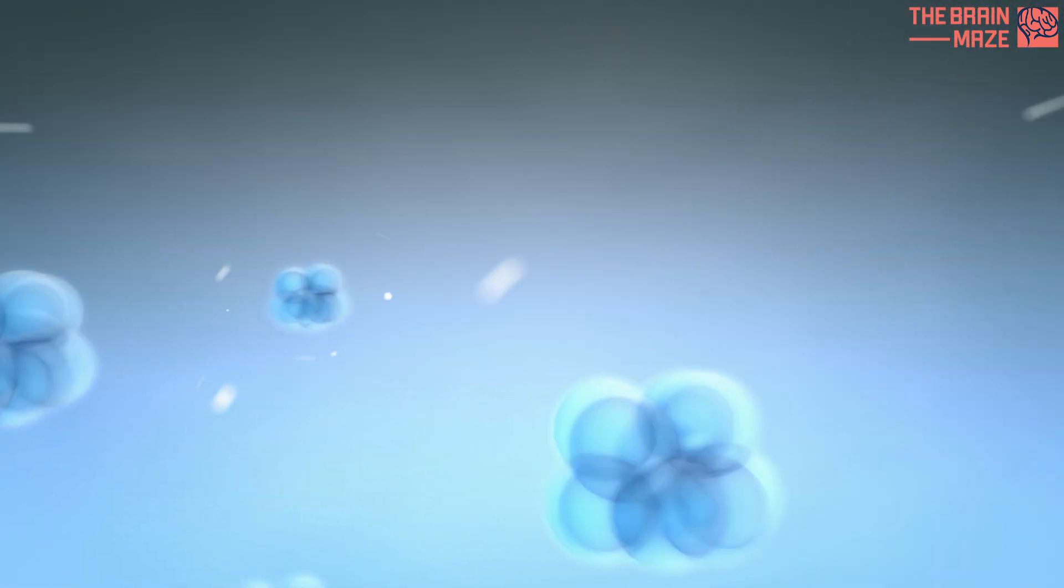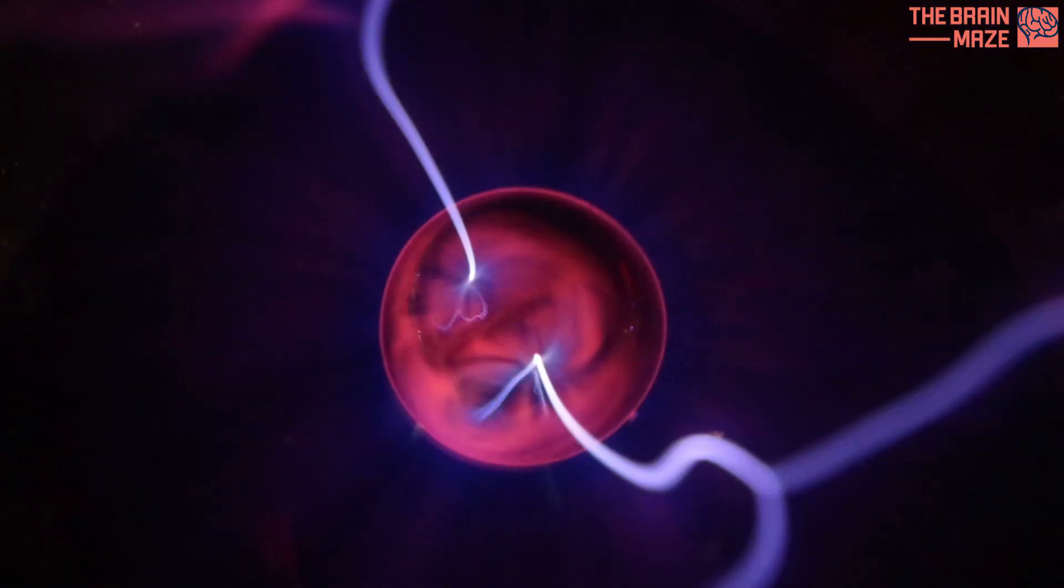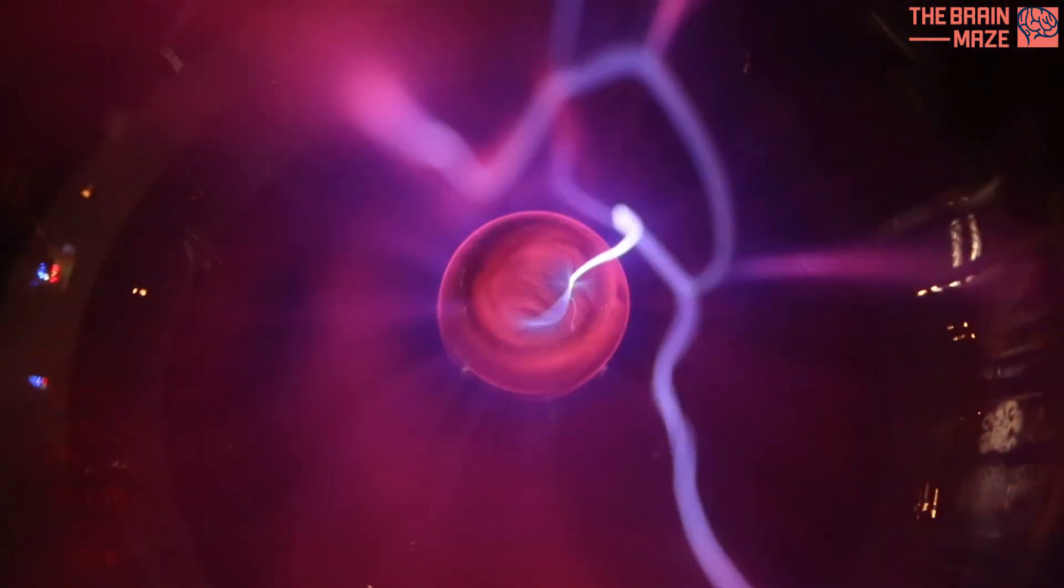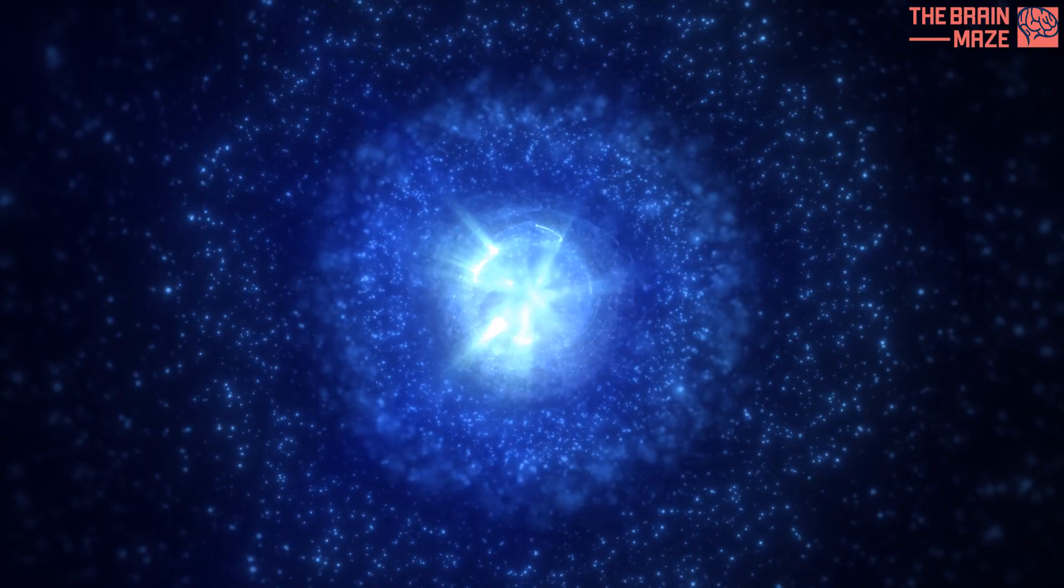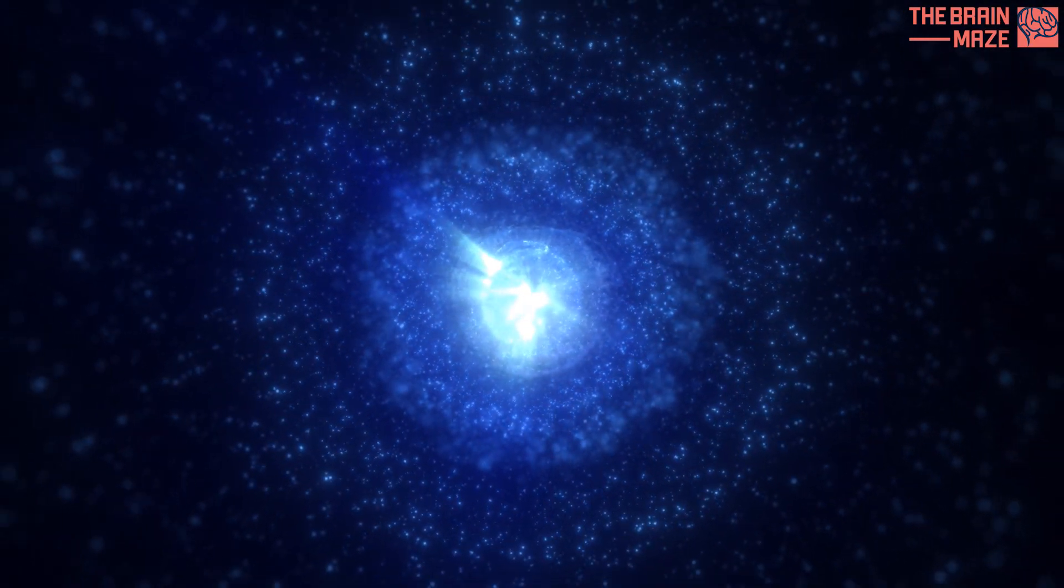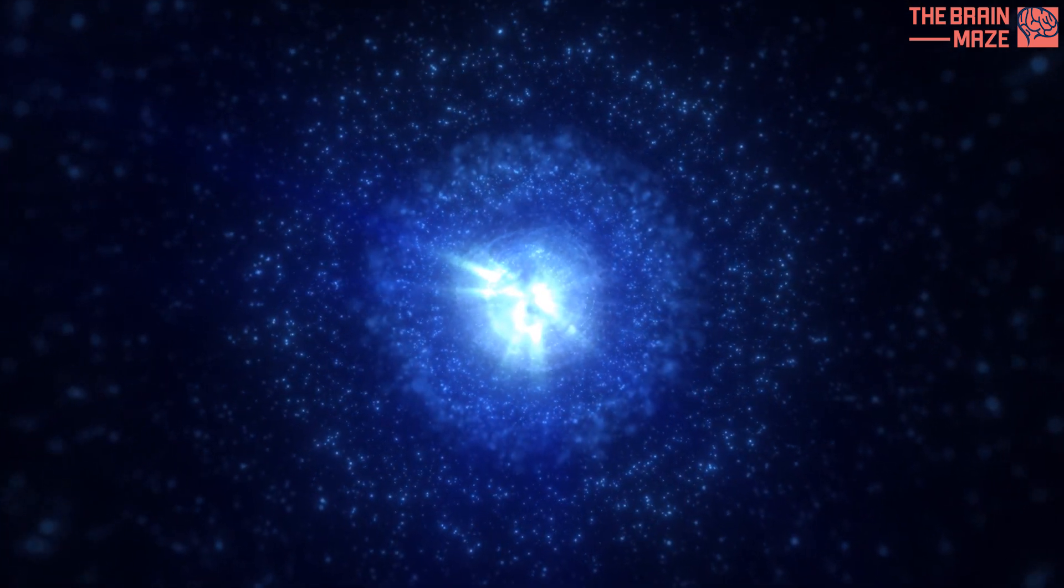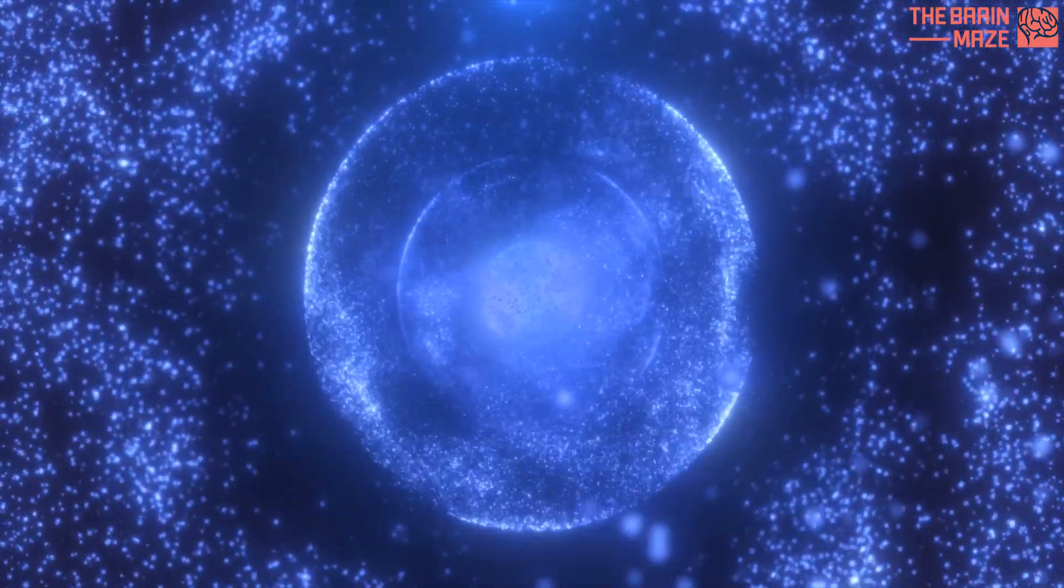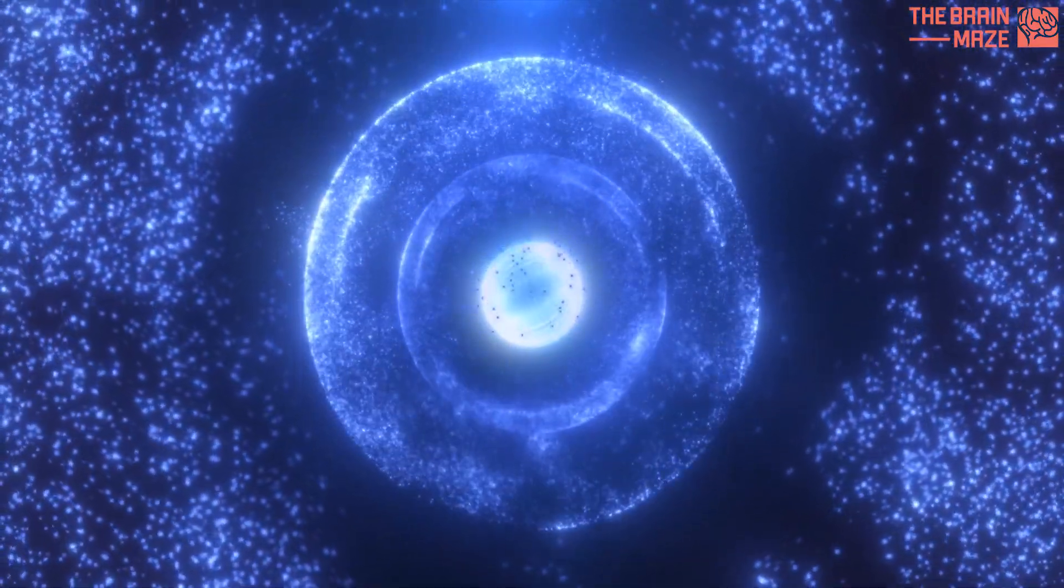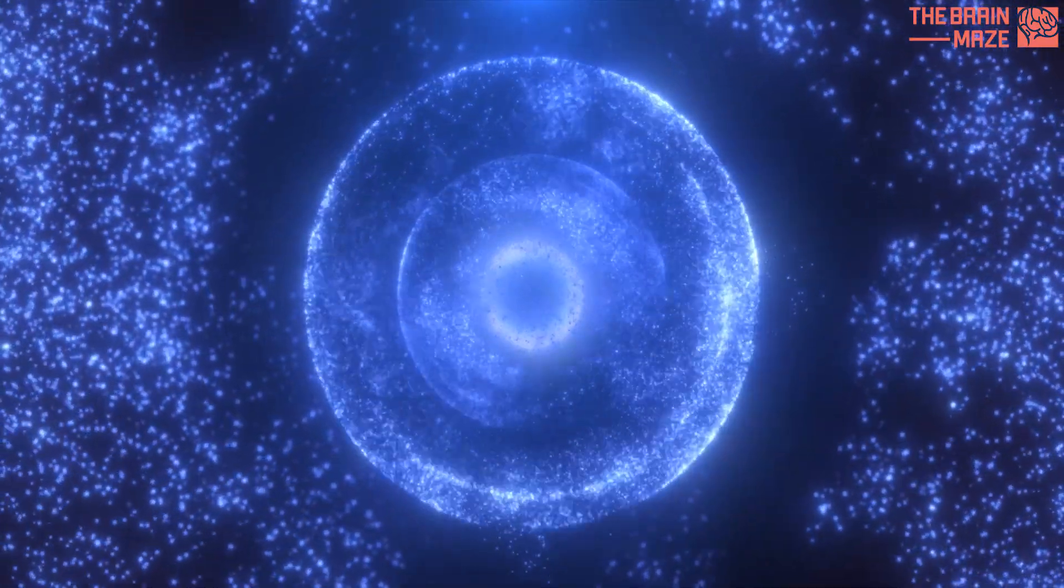Electrons are the tiny workhorses of the atom, constantly buzzing around the nucleus. They're incredibly important, influencing everything from the light we see to the way materials conduct electricity. But here's the weird part. Every single electron seems identical. They all have the same negative charge, the same mass. It's like they're all part of some cosmic copy-paste job.